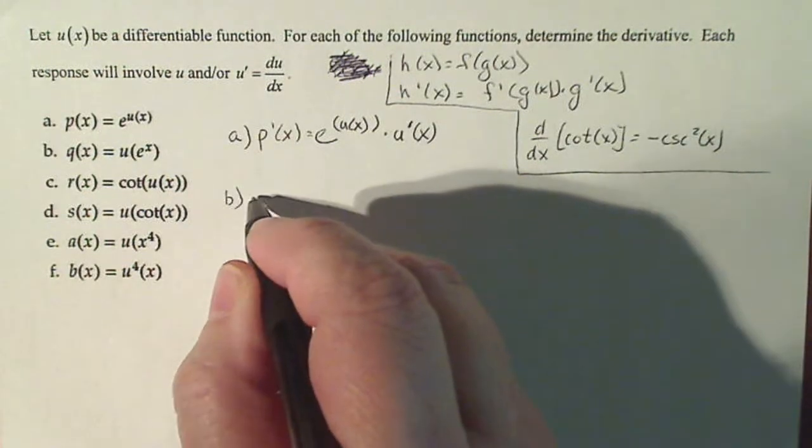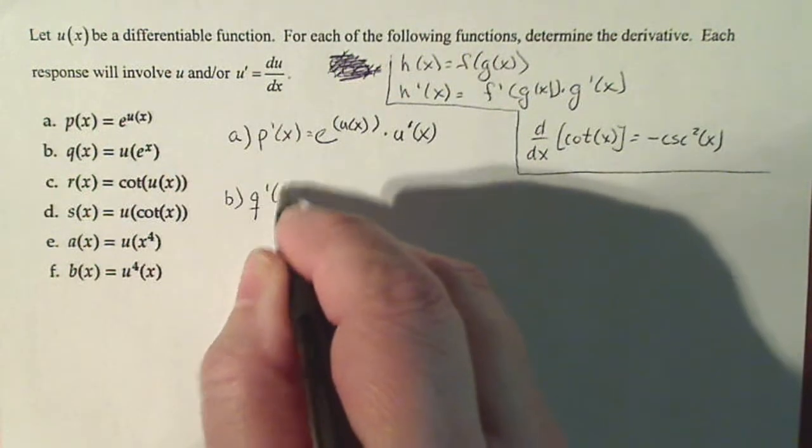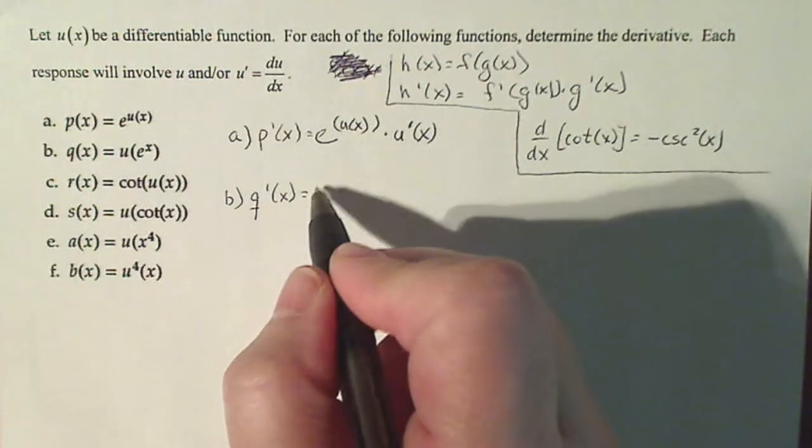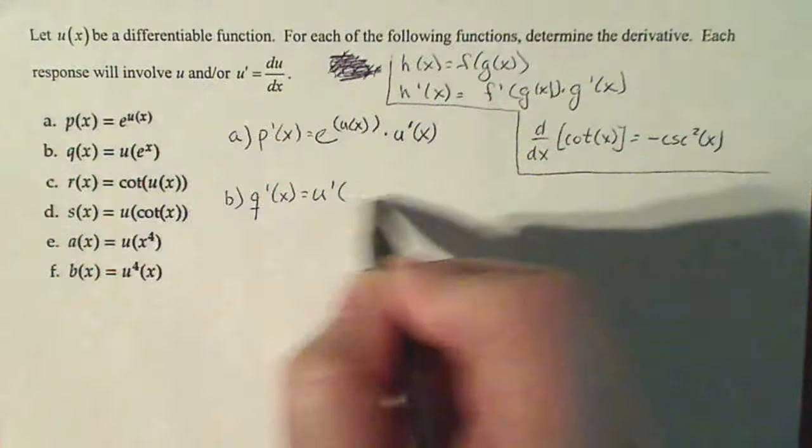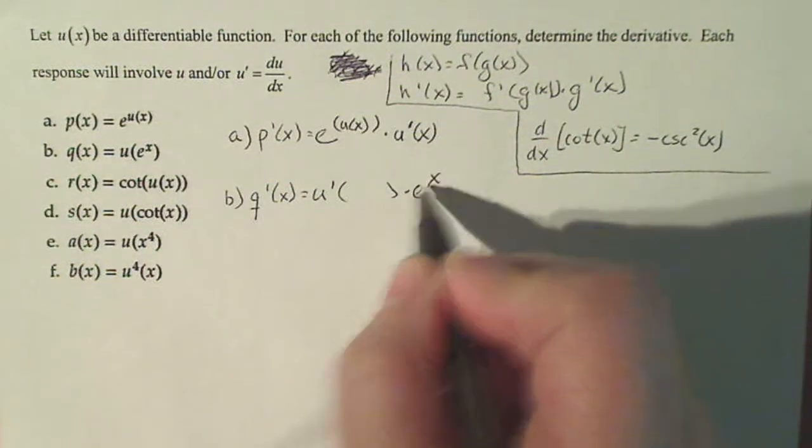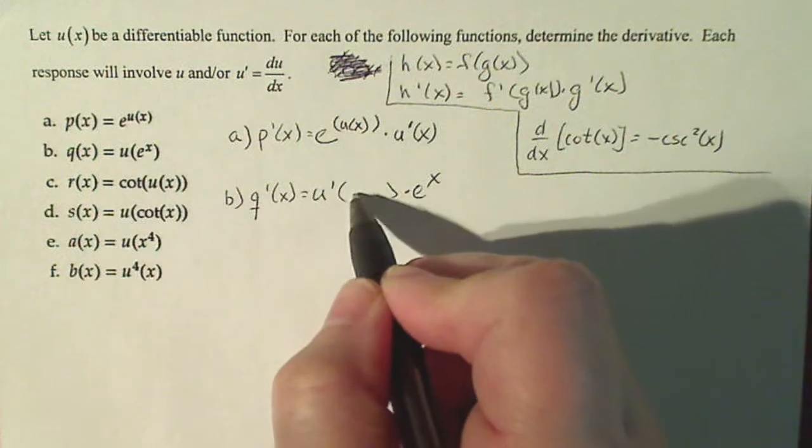Part b, q prime of x. So my outside function is u of x. So the derivative of u of x is u prime. The derivative of the inside, e to the x, is e to the x. And the original inside goes inside here.